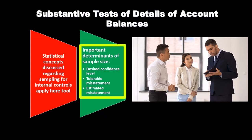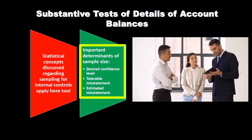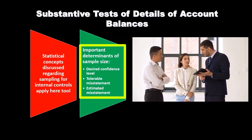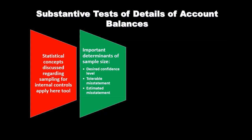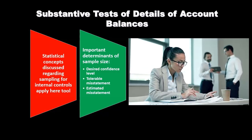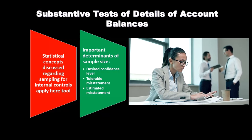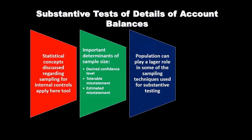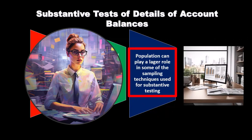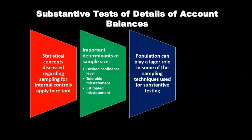An important determination is sample size. We want the desired confidence level — what confidence level do we want to have? We need the tolerable misstatement — how much misstatement is tolerable? Remember that we are looking for material misstatements, so we need to think about what a tolerable misstatement would be. We also want the estimated misstatement — what do we think the estimated misstatement will be? Population can play a larger role in some of the sampling techniques used for substantive testing, as opposed to the testing of controls.